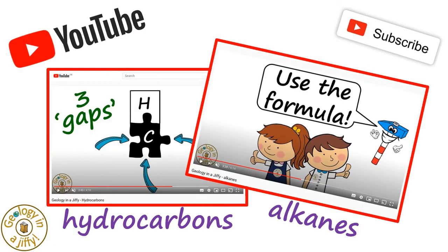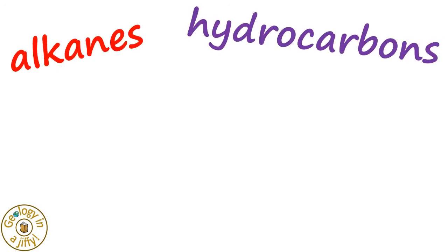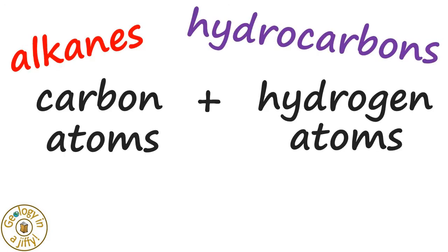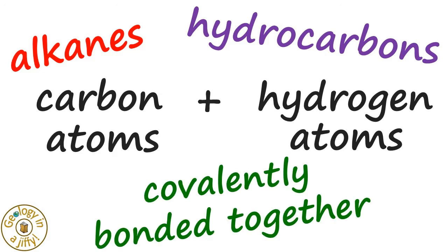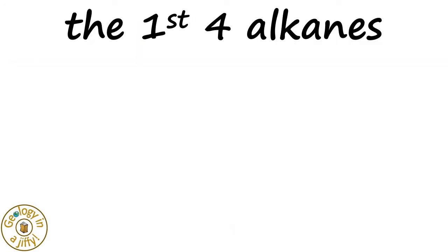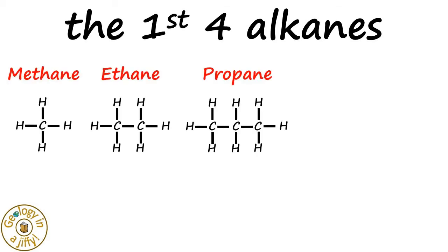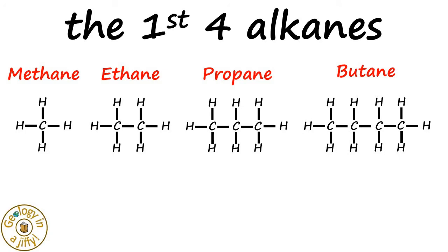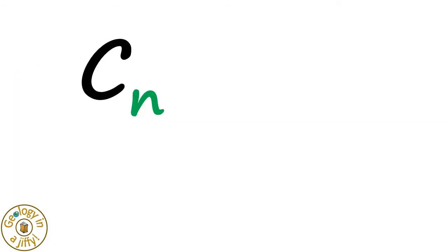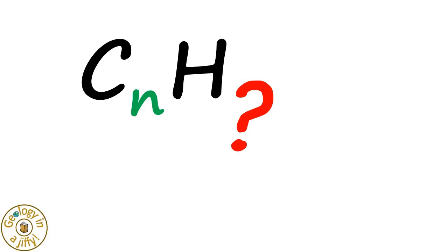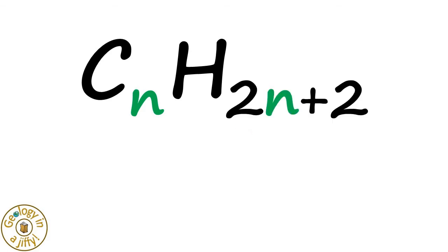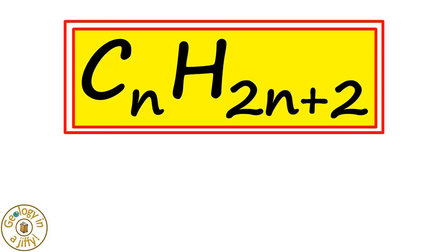From these Geology in a Jiffy videos we know that alkanes are hydrocarbons, which are compounds made of carbon atoms and hydrogen atoms, all covalently bonded together. We know the first four alkanes are, in order, methane, ethane, propane and butane. They are built using the idea that if there are n number of carbon atoms, the number of hydrogen atoms must be two lots of n plus two, which gives us this formula.